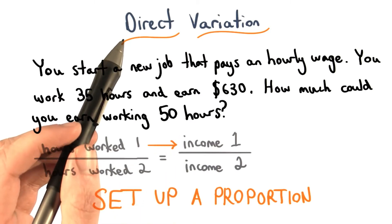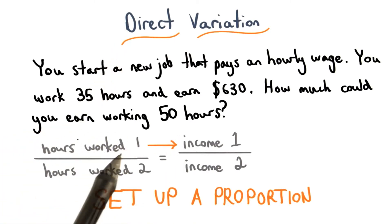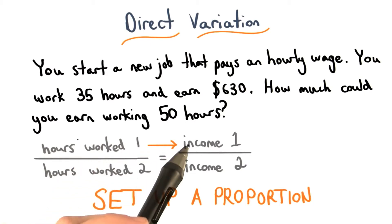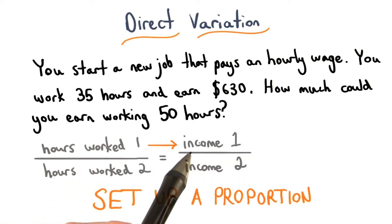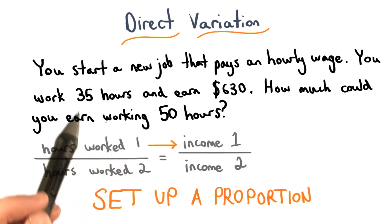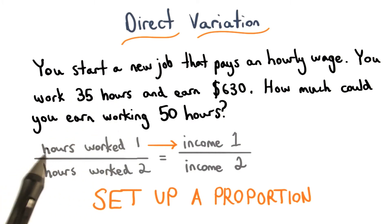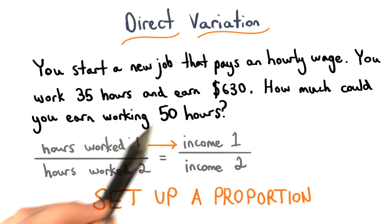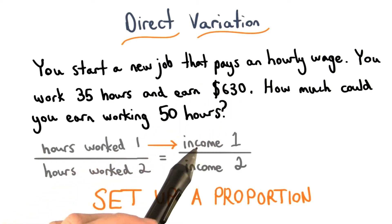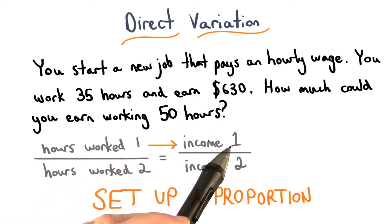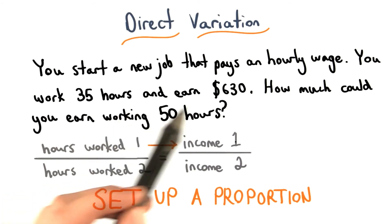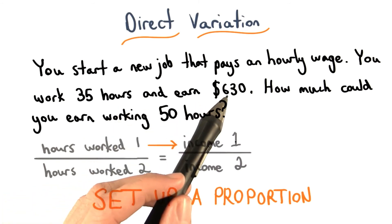We always want to keep our units the same. Whenever we have direct variation, the first amount of one unit will be directly across from the first amount of the second unit. So when I'm filling in this proportion, 35 hours should go here for the amount of hours worked, and $630 should go here for the income, because if we work 35 hours, we earn $630.